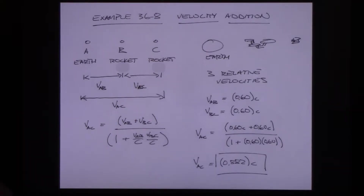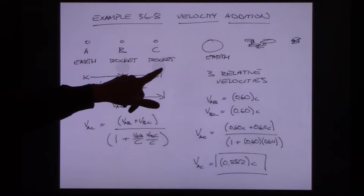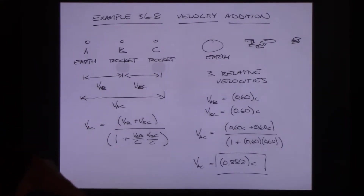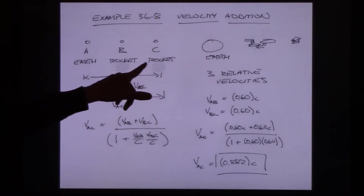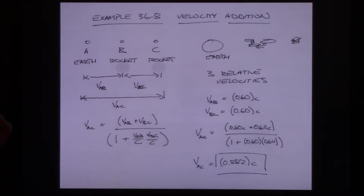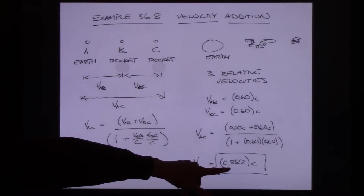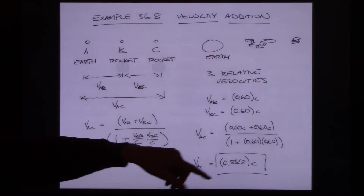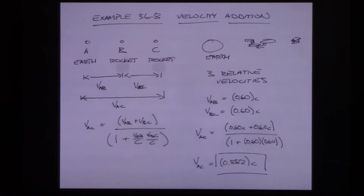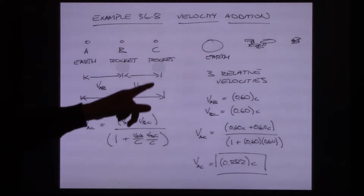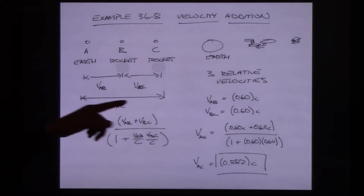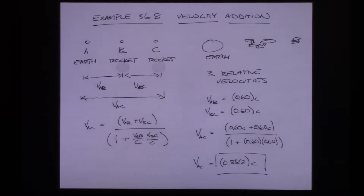You can go into each reference frame and ask what's going on. If I'm in rocket C, I'm at rest within that frame. I see rocket B moving away from me at 0.60c and I see Earth moving away from me at 0.882c. That's how you work back and forth between the three different relative speeds.